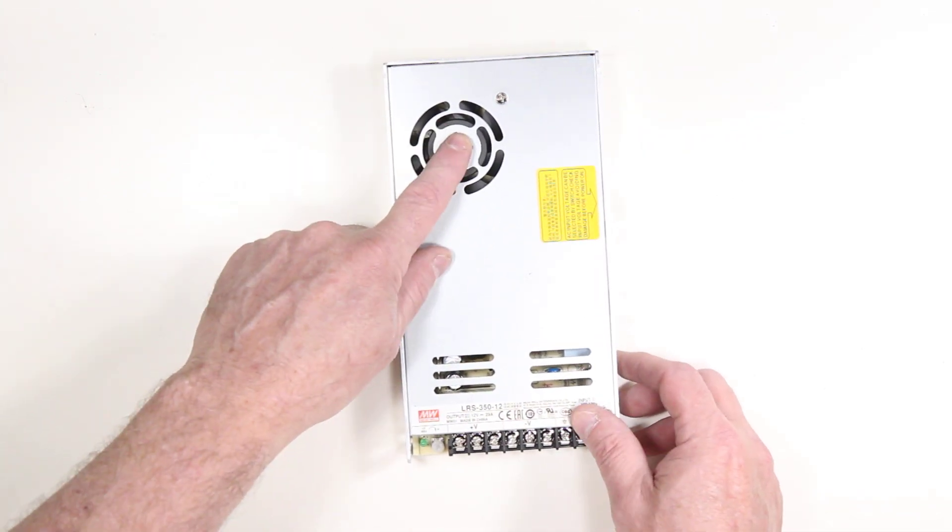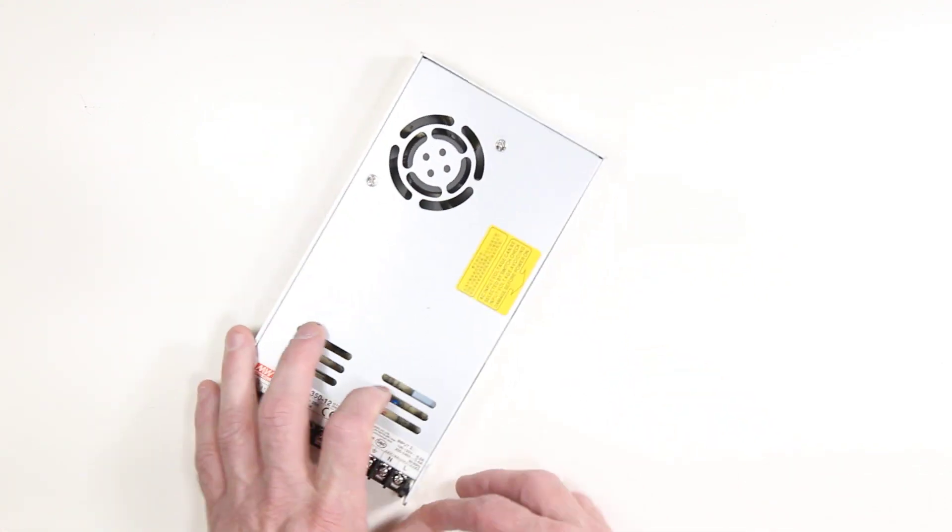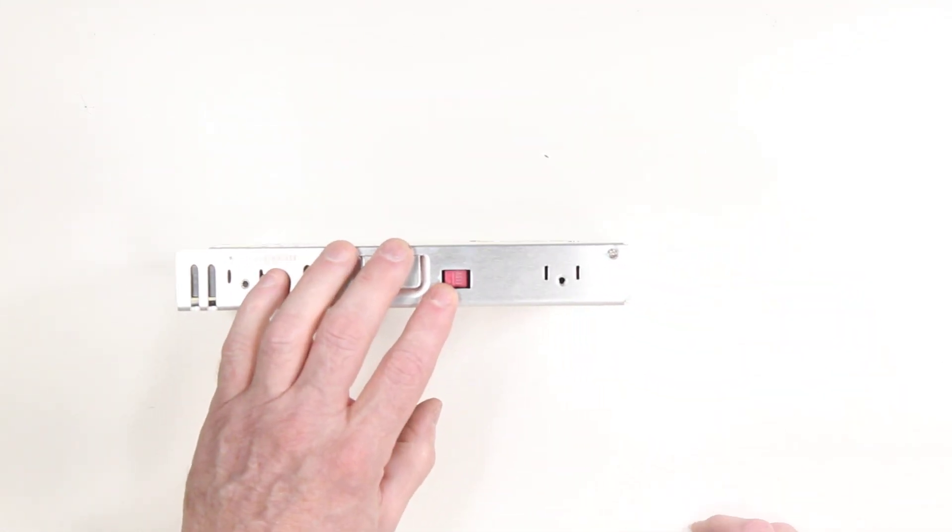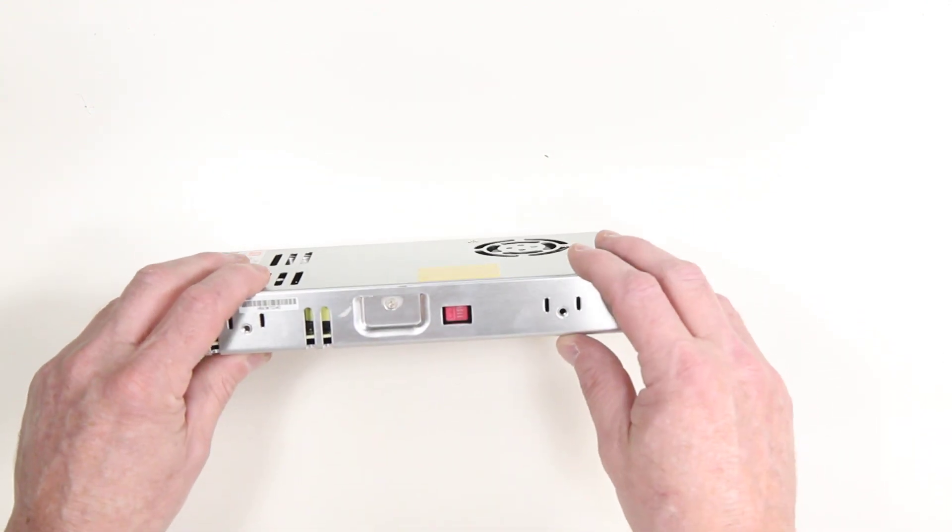On the top here we have a fan that is thermostatically adjusted so it only comes on when the unit is hot enough. On the side we have a switchable adjustment for 115 volts or 230 volts.